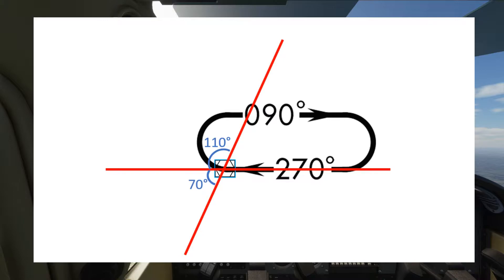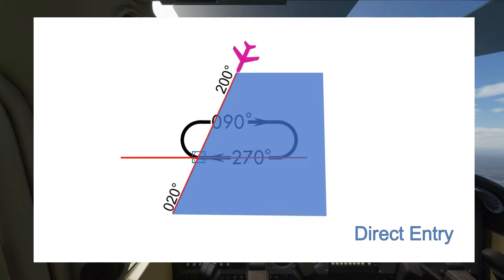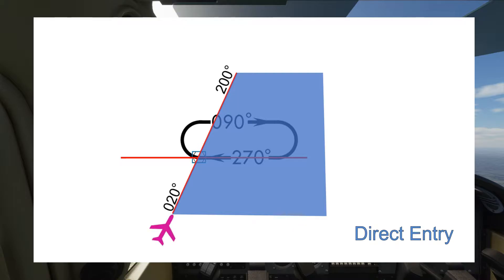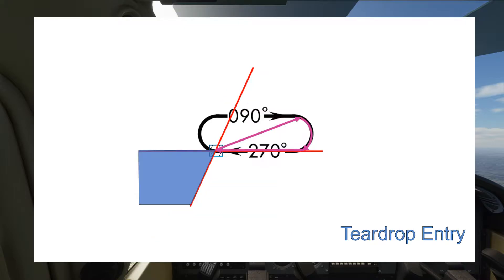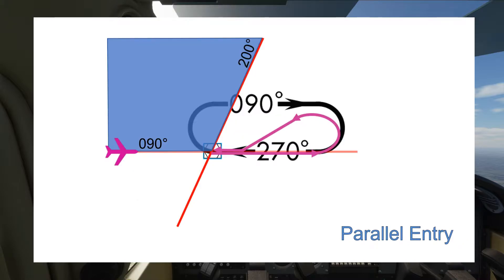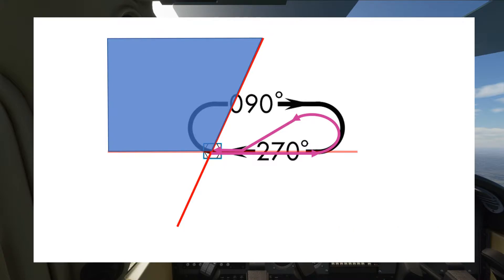In this example, if the aircraft's heading is between 200 degrees and 020 degrees, the hold should be entered using the direct entry technique. If the heading is between 020 degrees and 090 degrees, the teardrop technique would be required. If the heading is between 090 degrees and 200 degrees, the parallel entry would be the correct procedure. We will discuss these entries in more detail as the lesson progresses.